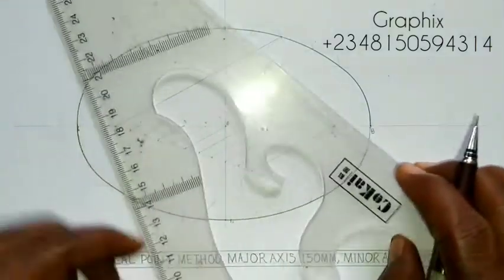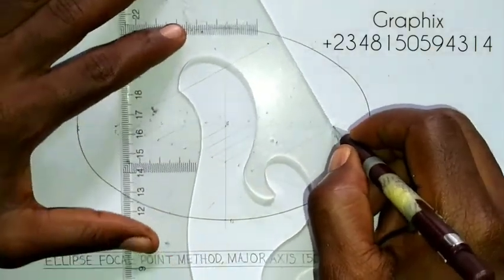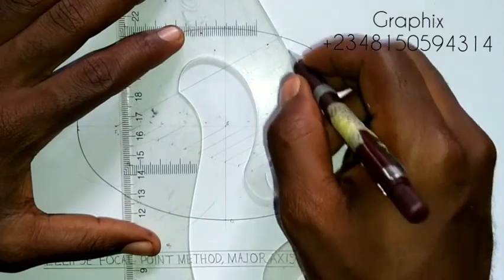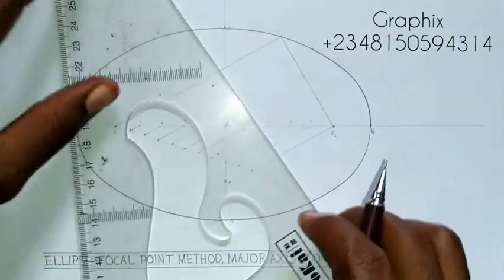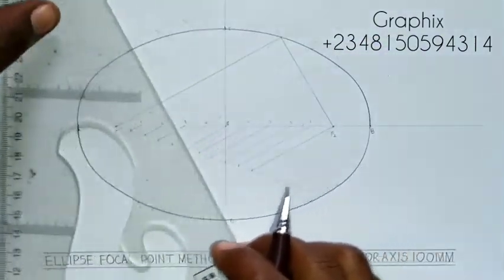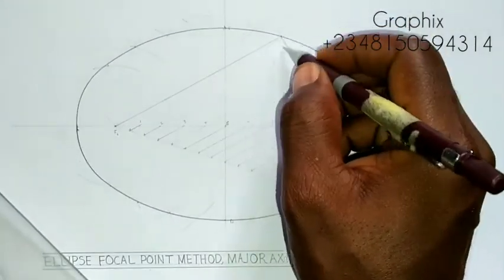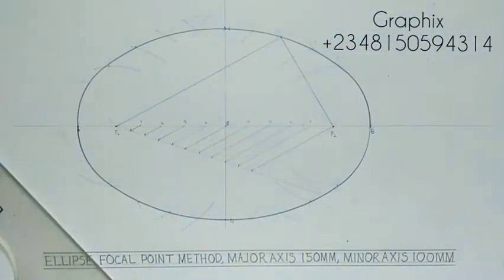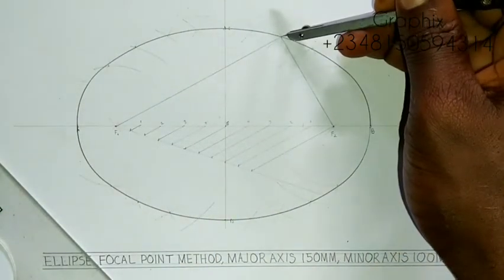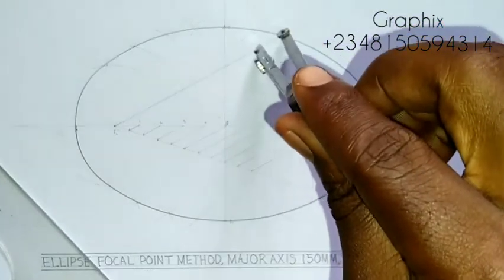And you draw a line from F2 that will go to that same point also, like this. So these two lines, you're going to bisect the angle. So in bisecting the angle, I will have something like this.